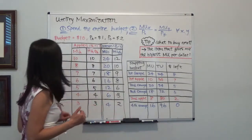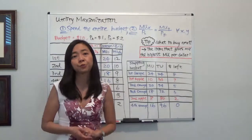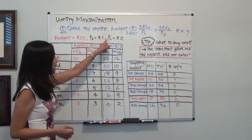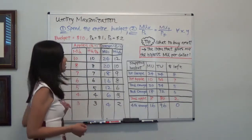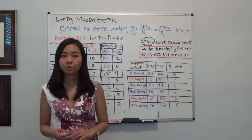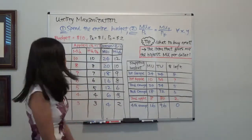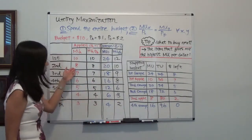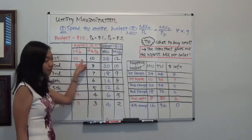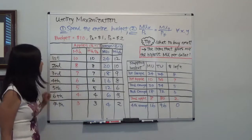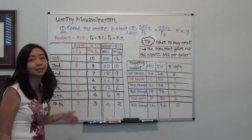Suppose we have a budget of $10 for fruit, and we're going to buy exactly two kinds of fruit. The first is apples, and the second is oranges. The price of an apple is $1, and the price of an orange is $2. Given Table 7.1, you are given the marginal utility of each apple — the first apple's marginal utility is 10 units, the second apple's is 8 units, and so on.